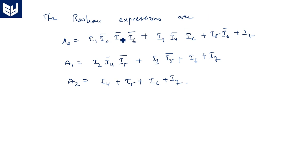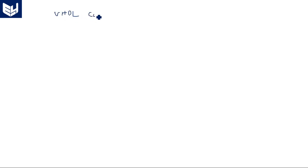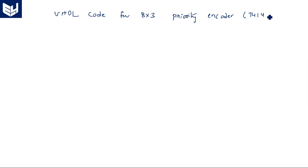These are the output boolean expressions derived from the truth table. Now we are going to write a VHDL code based on these expressions. Since we are writing with respect to boolean expressions, this falls under the data flow model. So this is the VHDL code for the 8 by 3 priority encoder IC 74148 in the data flow model.